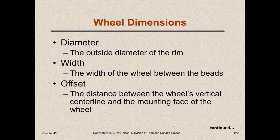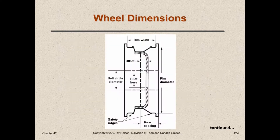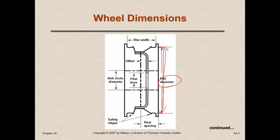The diameter is the outside diameter of the rim. The width is the width of the wheel between the beads, and the offset is confusing — we'll get to that. On this diagram, we've got rim diameter, which is the distance from where the tire sits inside the bead from one end to the other. If someone says they have 15-inch rims, that's what they're talking about.